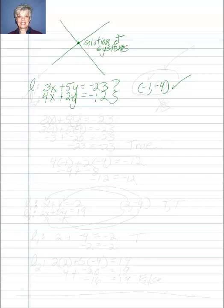I'm going to take line 1, 3x plus 5y equals negative 23. And I'm going to take this point, negative 1 comma negative 4, and I'll take the negative 1 and put it in, substitute it for the x, and negative 4 and substitute for y. So I'll have 3 times negative 1 plus 5 times negative 4...